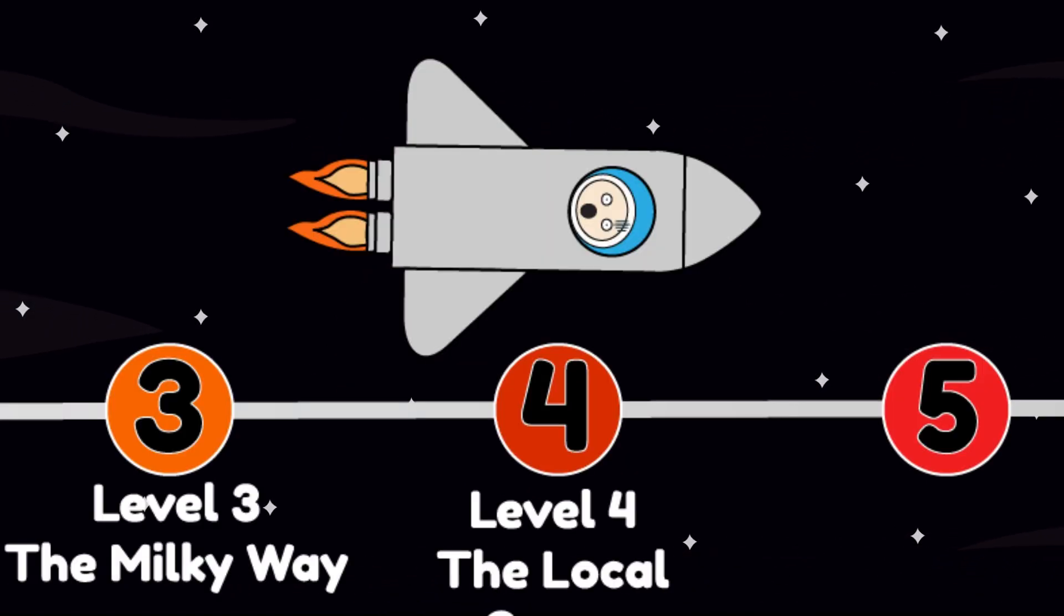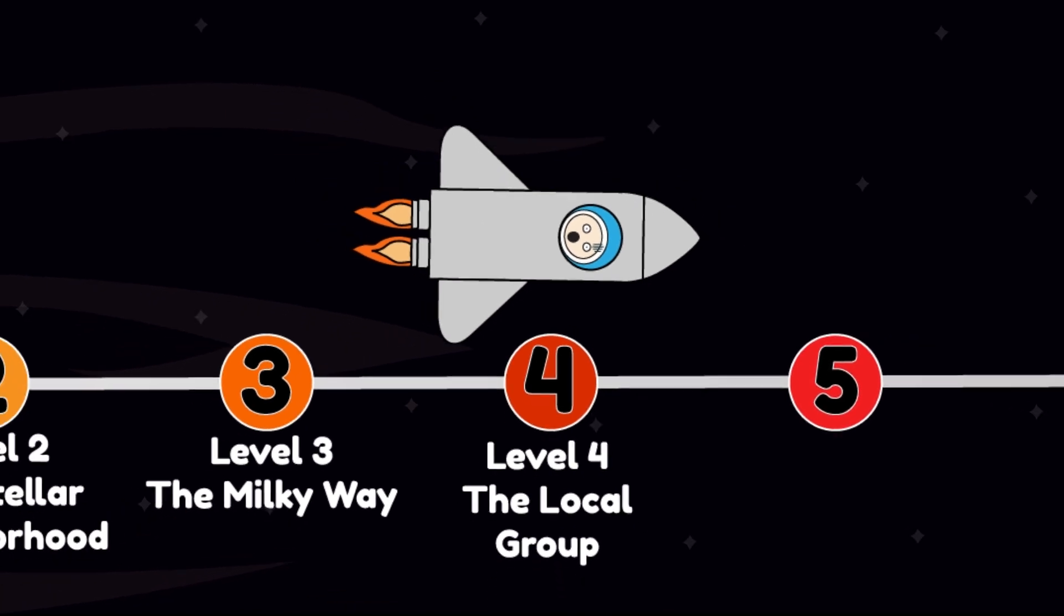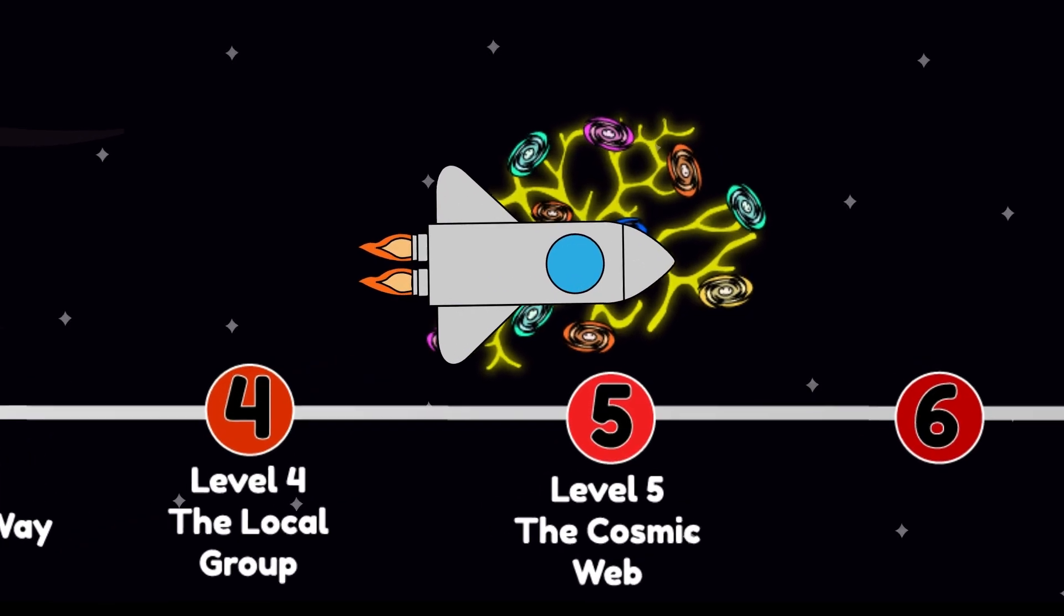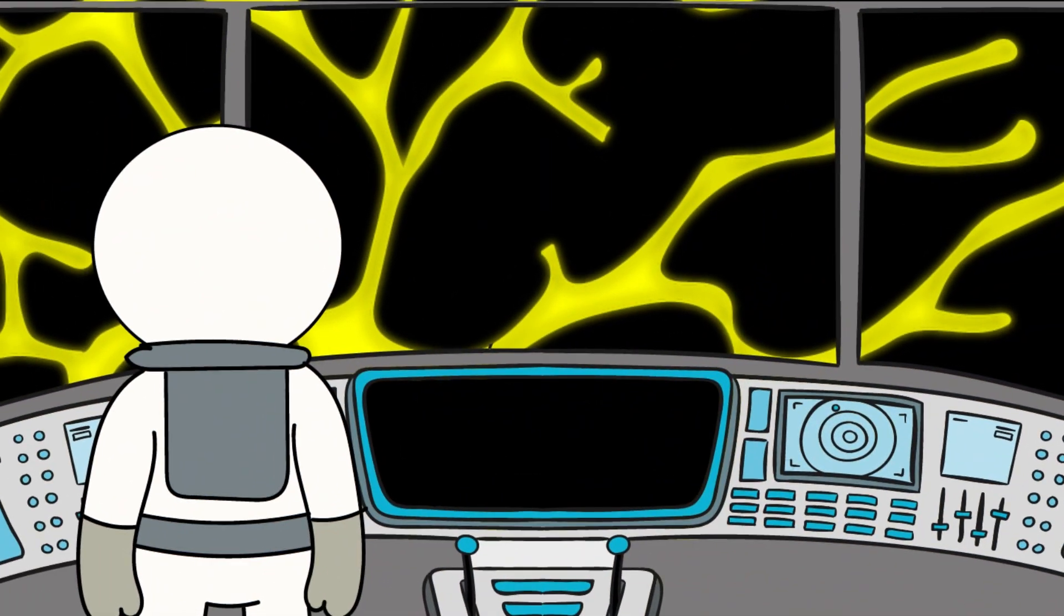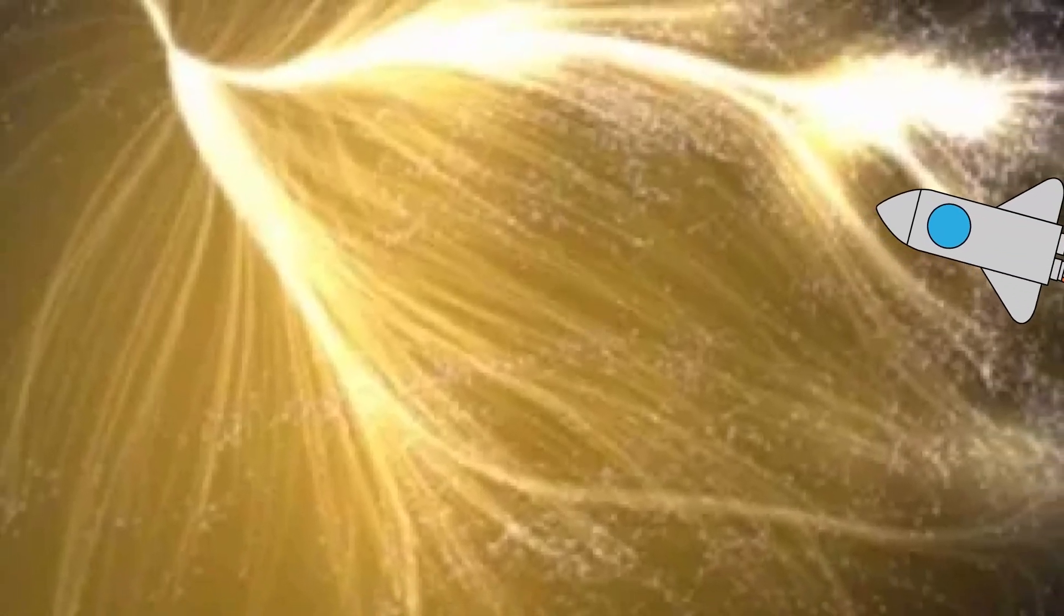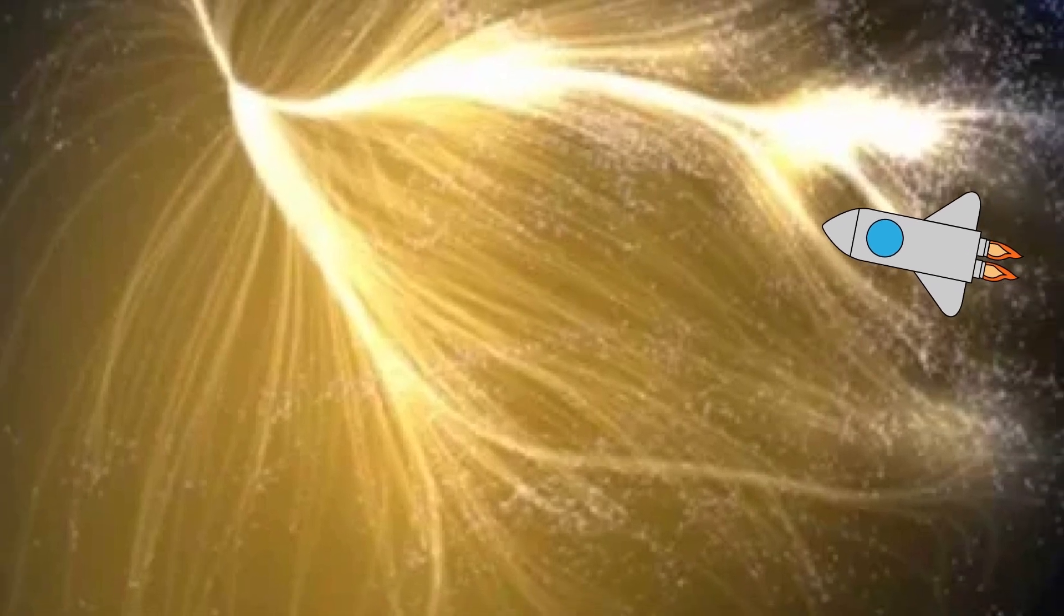You're not even halfway down yet. Feeling small? Good. You'll need that humility where we're going. Level 5. The Cosmic Web. Now it gets abstract. The universe stops looking like stars and starts looking like a brain. A massive neural network made of galaxies, connected by filaments of dark matter.